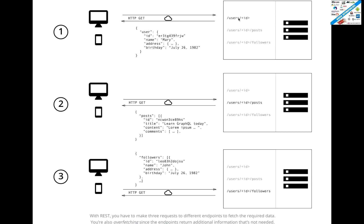First you fetch the user ID and get the user information. Then the second call you make to posts — for that ID, how many posts are available? Then the third request you send — for that user ID, how many followers are there? So this is the followers information you are getting, which means you are hitting three APIs back to back. And these three results you are showing on some blogging site or any kind of client — mobile, desktop, or any web application.